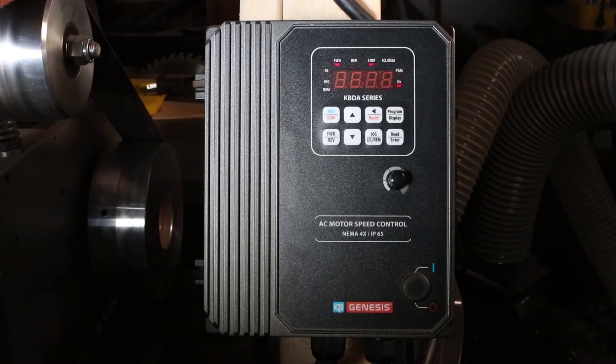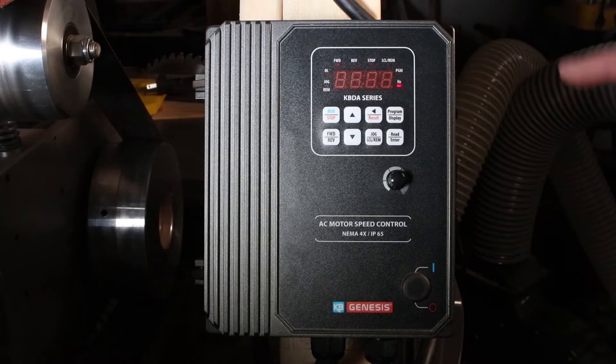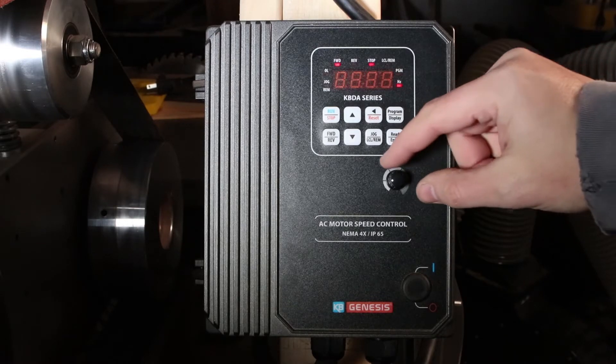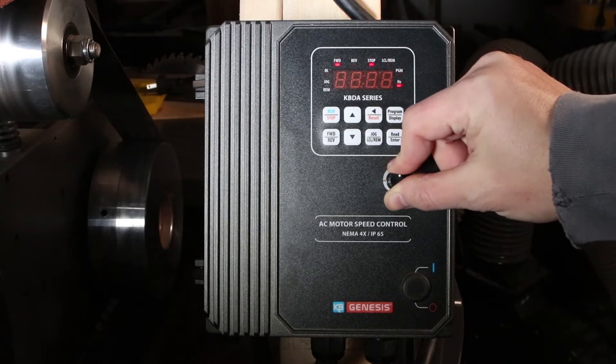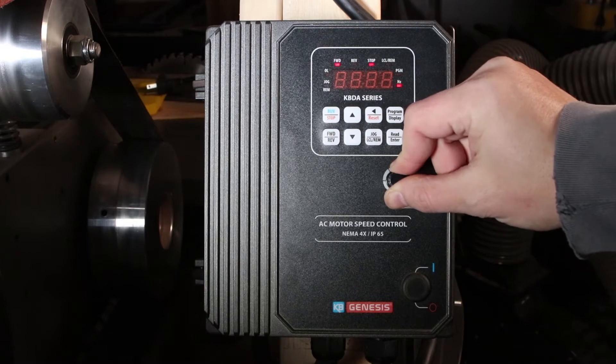When you get a VFD, you will generally be set up like this. The display will be in hertz. It generally blinks 5 per the manual. Easiest way to set it up for a custom display unit is this: you want to set it to maximum, which should show 60.